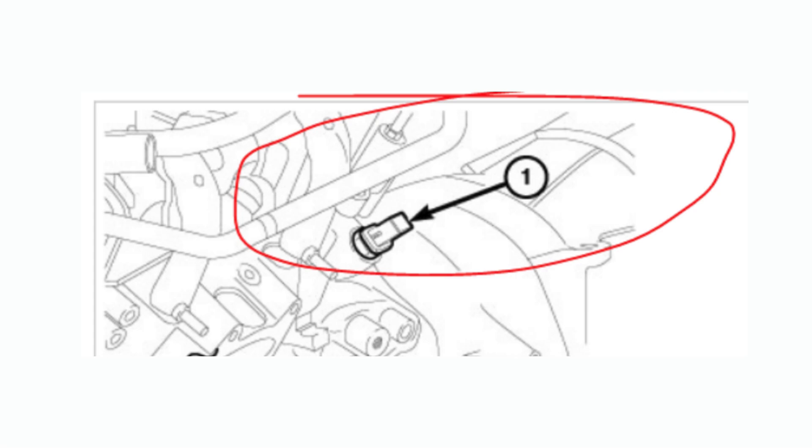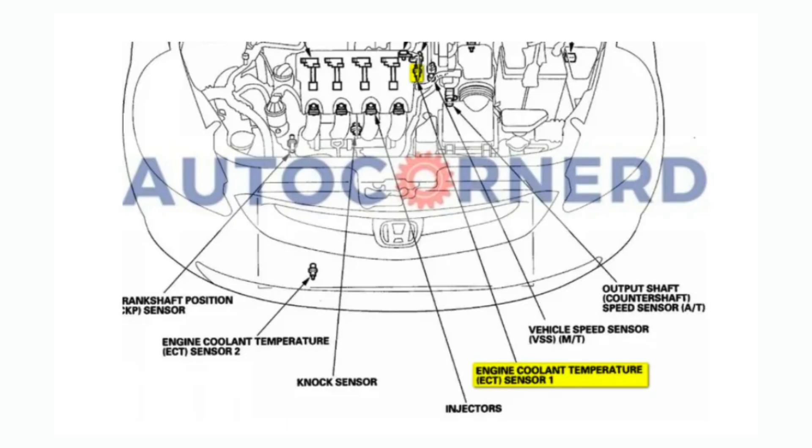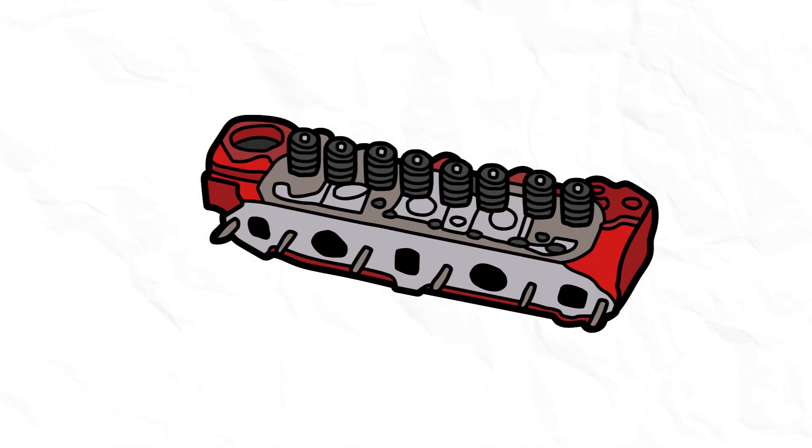Locating the ECT sensor can be a bit of a challenge. It's typically located near the thermostat housing or on the cylinder head. But the exact location varies from vehicle to vehicle. For instance, some models of Honda Civic have two engine coolant temperature sensors. You have to check the one located closest to the cylinder head.